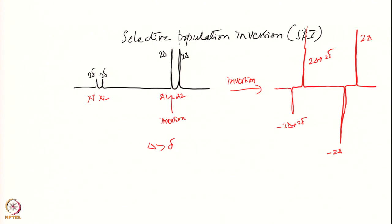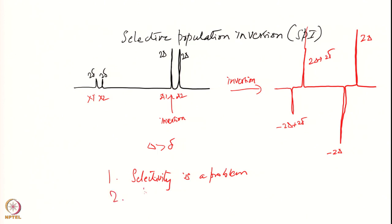This was a population transfer — as a result of population transfer from the A spin (one of its transitions), we get a significant enhancement in the intensities of the X transitions. However, we had the problem of positive/negative signals and selectivity being quite an issue. Applying a selective pulse was difficult, so selectivity was a problem, and we cannot do it in crowded spectra. We also have positive/negative signals.